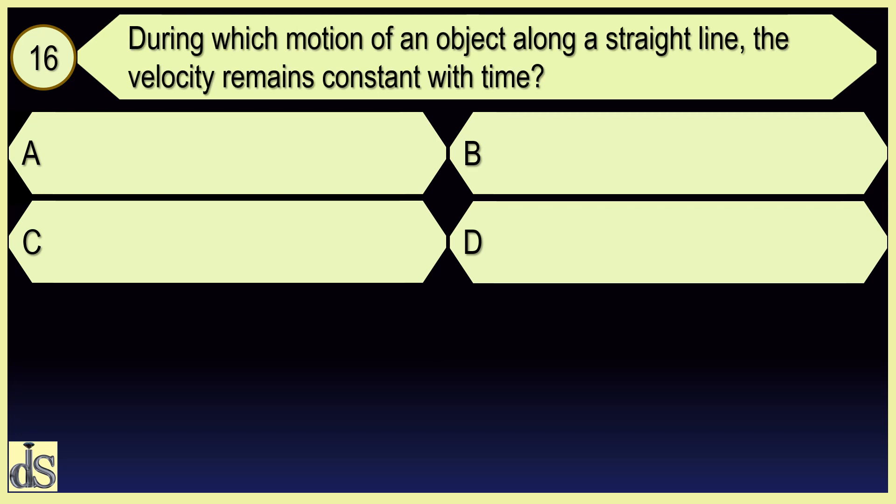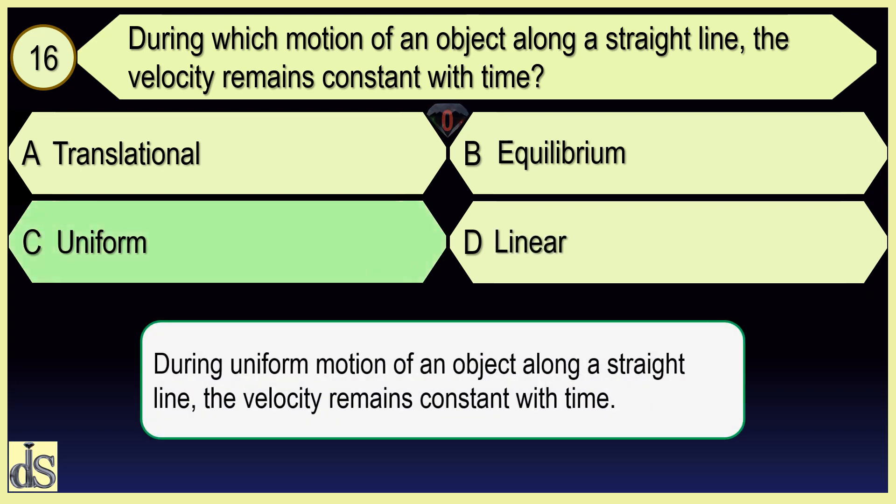During which motion of an object along a straight line does the velocity remain constant with time? Uniform.